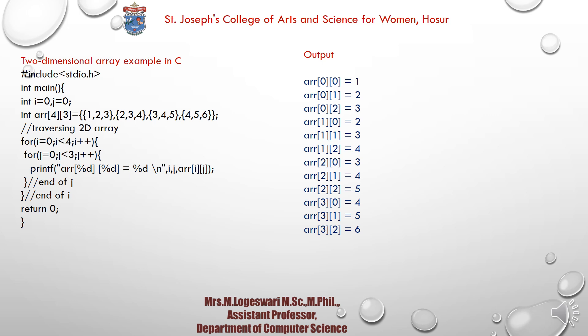The initialized values are then stored at specific positions. For example, value 1 is stored at [0][0], value 2 at [0][1], and value 3 at [0][2]. This is the example for initialization of a two-dimensional array.